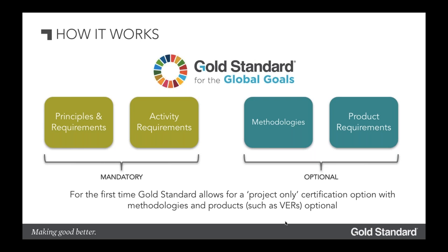There are two key value adds to note. One is that since methodologies and products are optional, Gold Standard will now certify the project as a project-only pathway — we no longer insist that you follow a methodology and issue something. That's been attractive to some land use projects who aren't necessarily looking to issue carbon credits. The other benefit is greater flexibility of pathways. At the moment in land use we have only carbon credit methodologies and products, but breaking this up and making it a more flexible pathway means we can develop more options for project developers to access different areas of finance or to use the projects in different contexts.